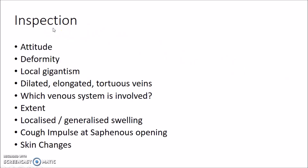Coming to inspection, the attitude of the limb should be examined and any deformity noted. Local gigantism should be inspected — that is, you need to compare both legs and see if the diseased leg is swollen. You need to inspect the varicose veins, which are usually dilated, elongated and tortuous. You need to inspect which venous system is involved — whether the great saphenous vein or the short saphenous vein. If the great saphenous vein is involved, varicosities are usually seen on the medial side of the leg; if the short saphenous vein is involved, varicosities are usually seen on the lateral side of the leg.